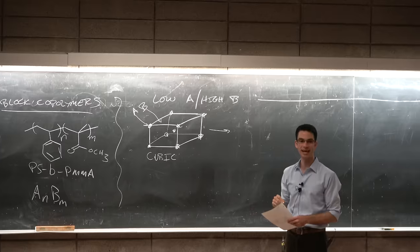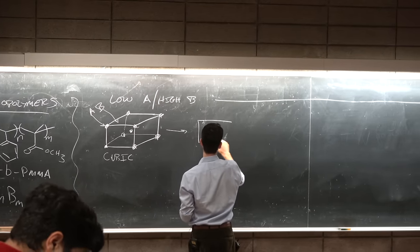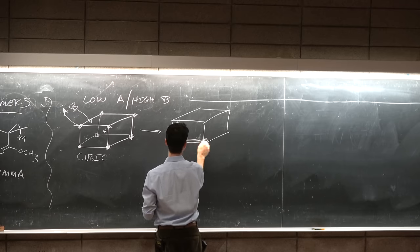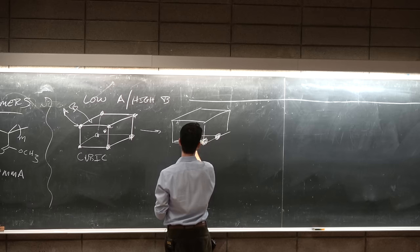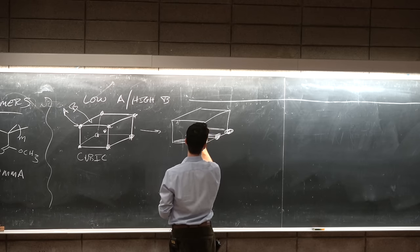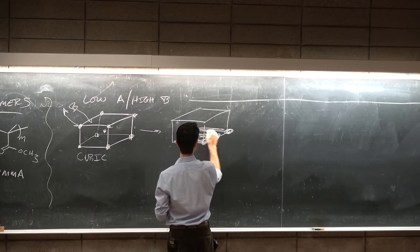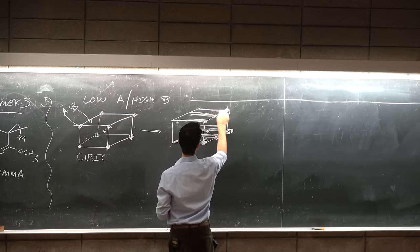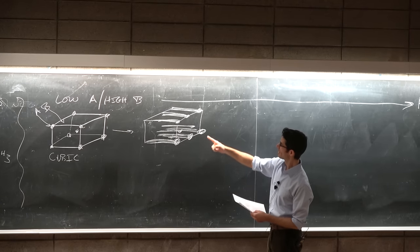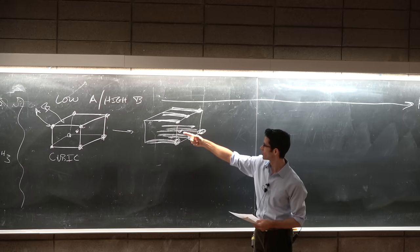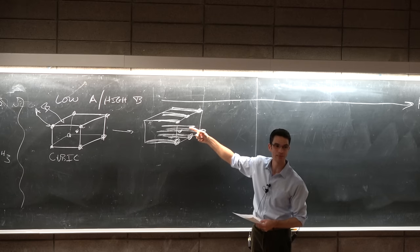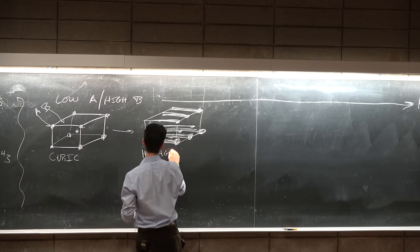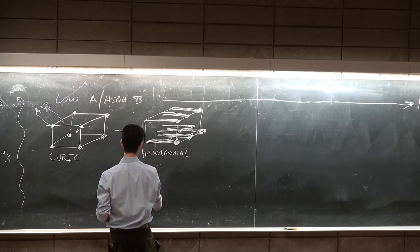And if you think about a cubic unit cell, the first structure that you get, where let's say the filled parts are A, and all the other space is B, this is a cubic structure. Then as you increase the fraction of A in your block copolymer chain, you get another type of structure which becomes thermodynamically favorable. And that is a hexagonal structure.